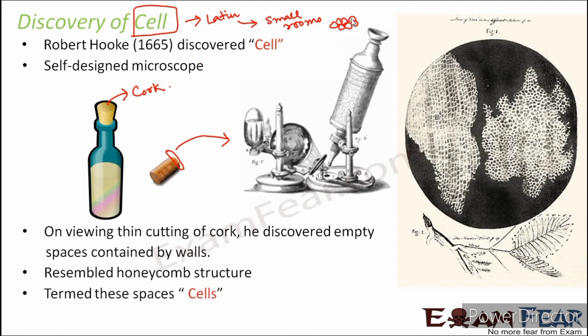So this is how the cell was discovered. The microscopical studies that were originally assigned to Sir Christopher Wren were handed over to Robert Hooke, and he ended up discovering the cell — quite an interesting story.